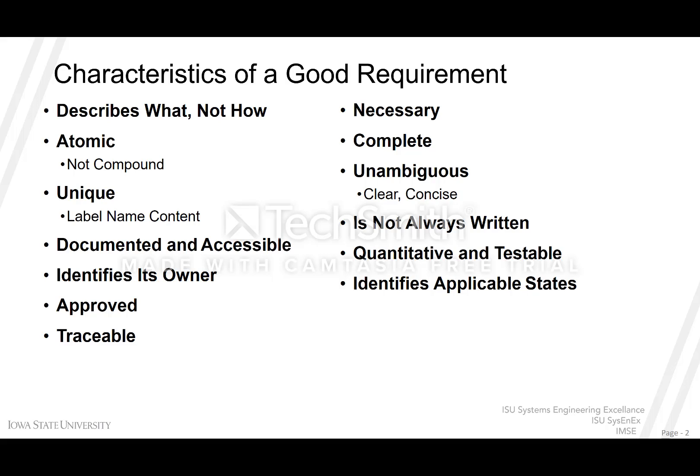Qualitative and testable. Don't say 'the lever arm must be strong,' because that's ambiguous — how strong is strong? Instead, say something like 'must be able to sustain a weight of 500 pounds.' That is much more concrete, black and white, easier to test, and allows sub-elements to understand what they need to conform to.